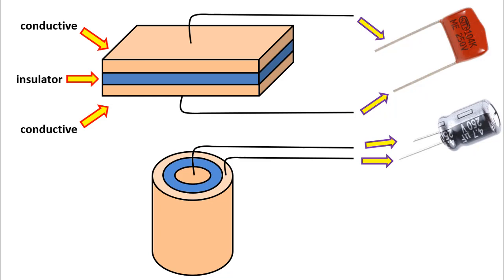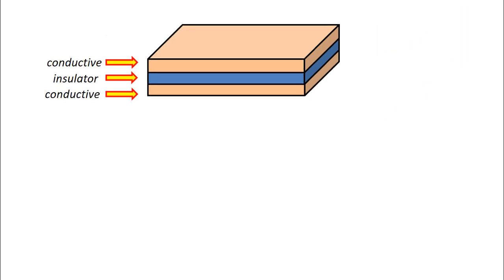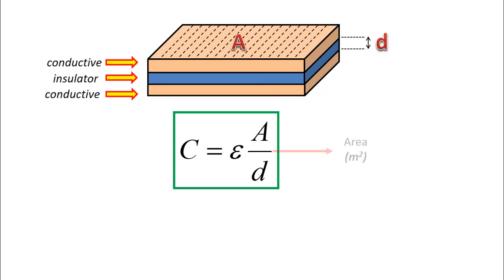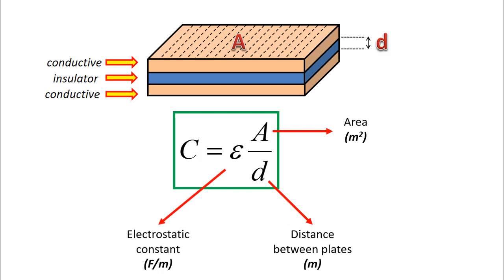So, how does the capacitor's capacitance value change? The surface area of the conductor plates, the dielectric coefficient of the insulating material between the conductor plates and the distance between the plates, change the capacitance value of the capacitor. The capacitance value of the capacitor is calculated by the formula you see here.